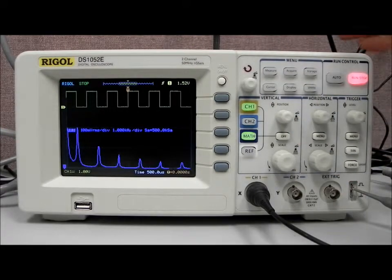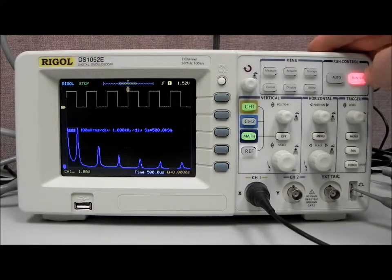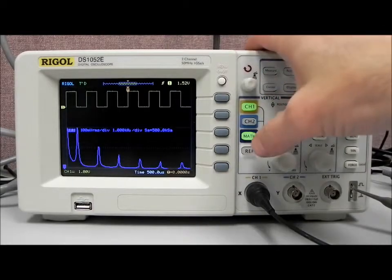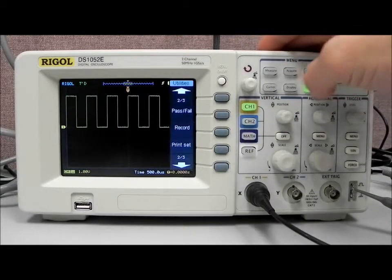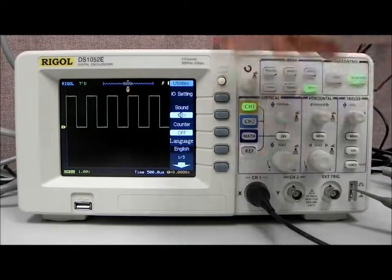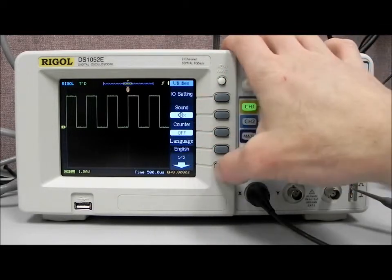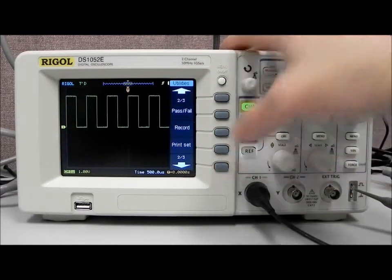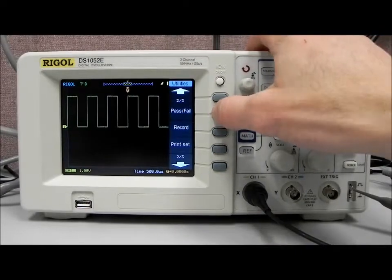Another great feature of the scope is the mask and pass-fail function. So I'm going to enable the scope to run again. Disable math. I'm going to go to utility and pass-fail, and pass-fail sometimes will come up in this main page, page one, you'll see it says one of three, so let's go to two of three in the utilities menu, hit pass-fail, and now what we can do is create a mask.